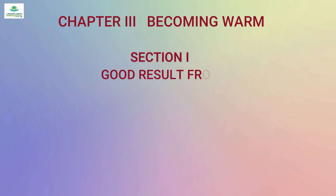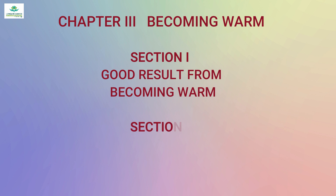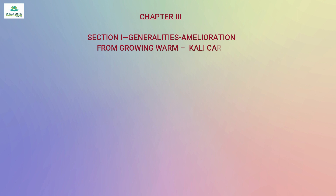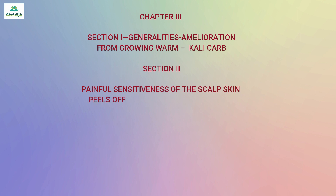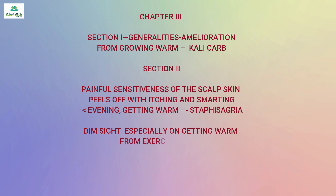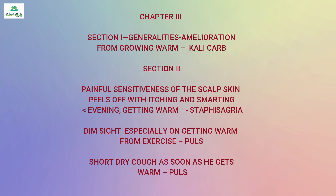Chapter 3 is 'Becoming Warm.' Section 1 is 'Good results from becoming warm'; Section 2 is 'Bad results from becoming warm.' Some rubrics include: 'Amelioration from growing warm' — Kali carb; 'Painful sensitiveness of the scalp, skin peels off with itching and smarting, worse evening and getting warm' — Staphysagria; 'Dim sight, especially on getting warm from exercise' — Pulsatilla; 'Short breath as soon as he gets warm' — Pulsatilla.